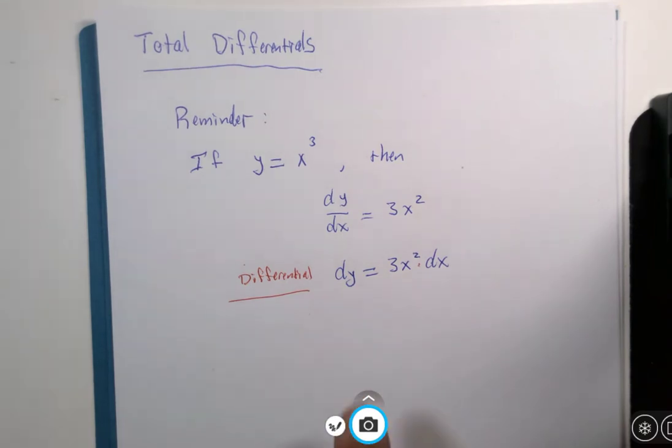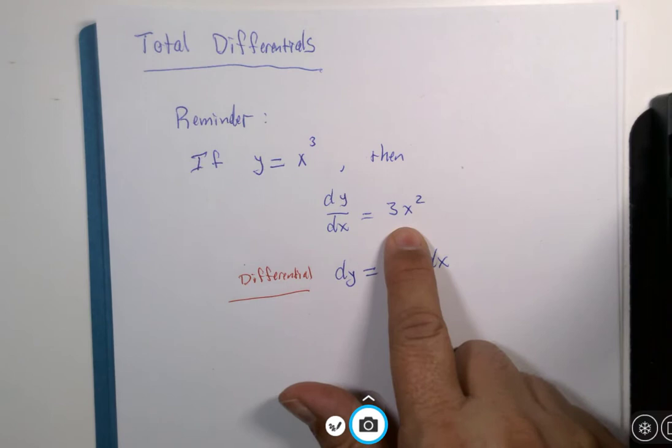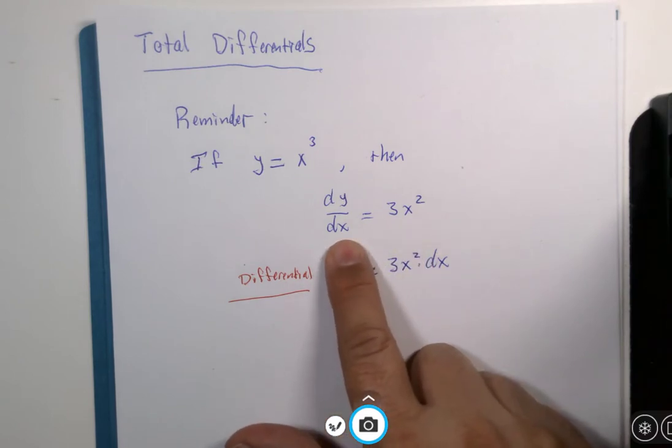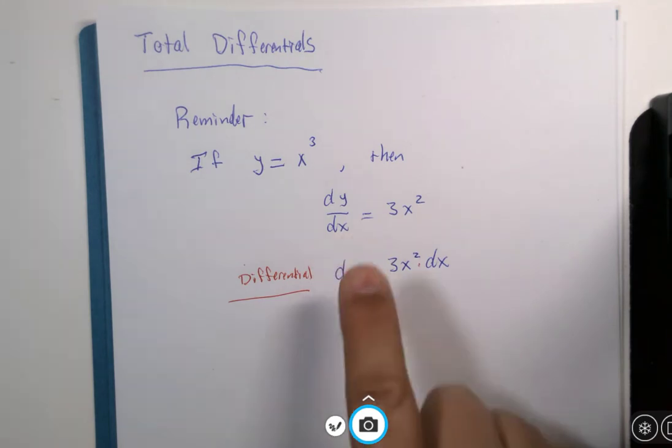It sort of looks like we just multiplied both sides by dx as if this were an actual fraction. You can find lots of discussion about that topic if you want to search around the internet.